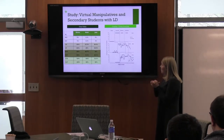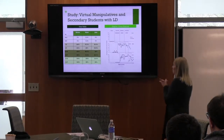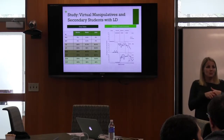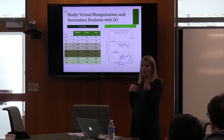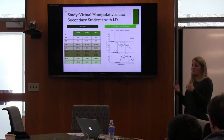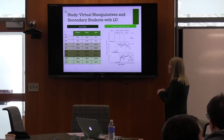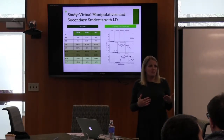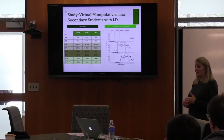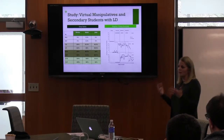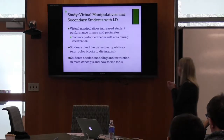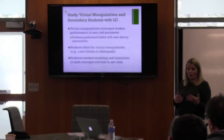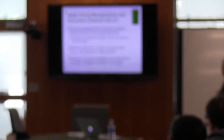Mark showed no overlapping data between baseline and intervention, but there was some variability — he struggled with maintenance and generalization. Interestingly, students tended to perform better with area during intervention, but during generalization and maintenance they tended to do better with perimeter. Jake was quite variable: no overlapping data, some accelerating trends, but problems with maintenance and generalization, which would prompt a teacher to go back and provide additional instruction.